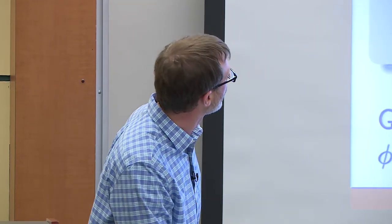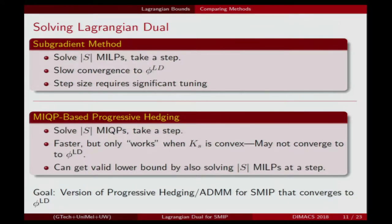The limitation is that this theoretically only converges to the best possible Lagrangian dual bound when the problem is convex, which is not the case for mixed integer linear programming. Of course, this is a concave maximization, non-smooth problem — you could apply a subgradient method to solve the Lagrangian dual, but that tends to have slower convergence and requires significant tuning. So we'd like something more like a progressive hedging style algorithm that can be guaranteed to converge to the Lagrangian dual bound.